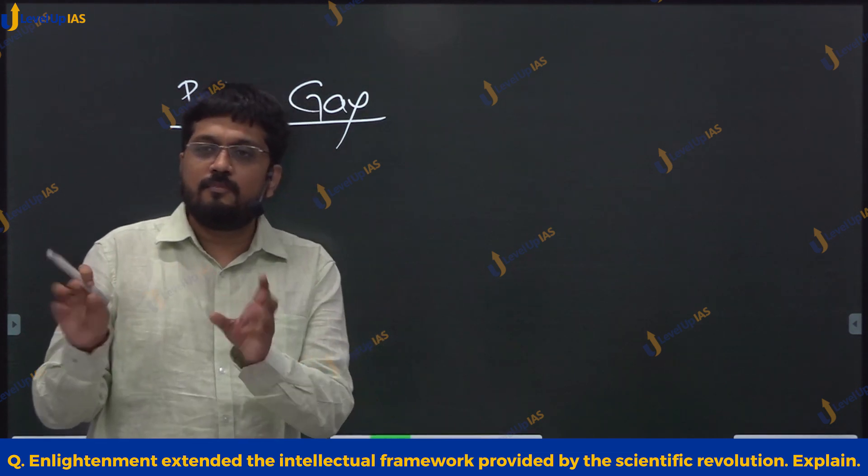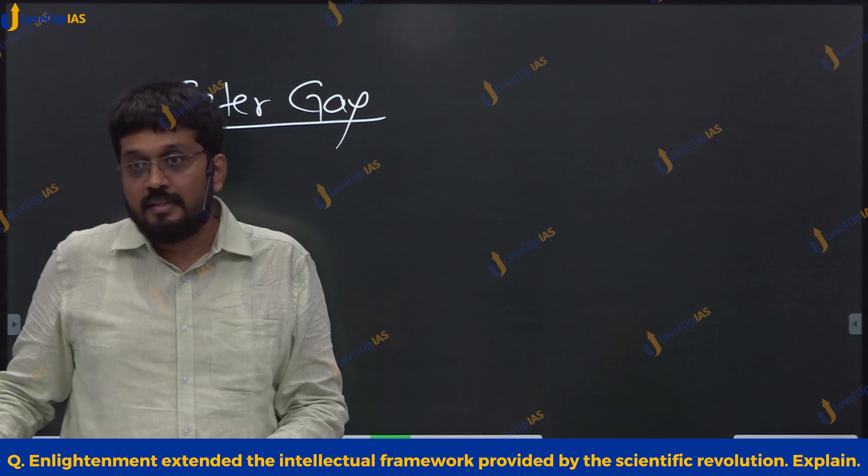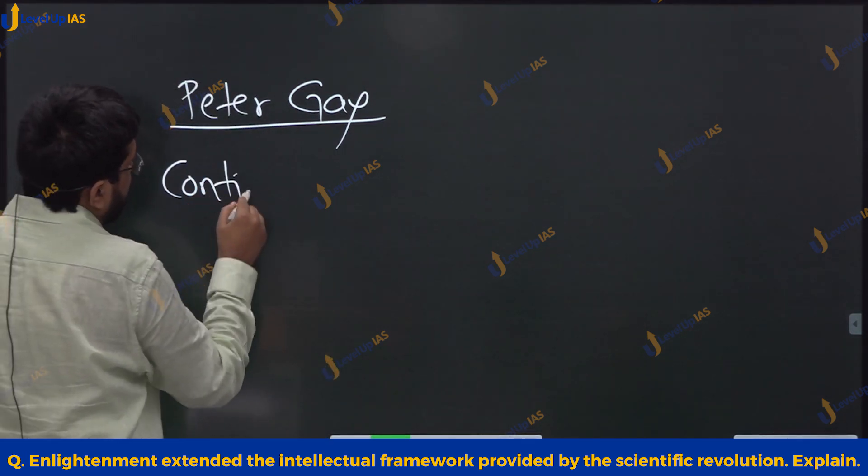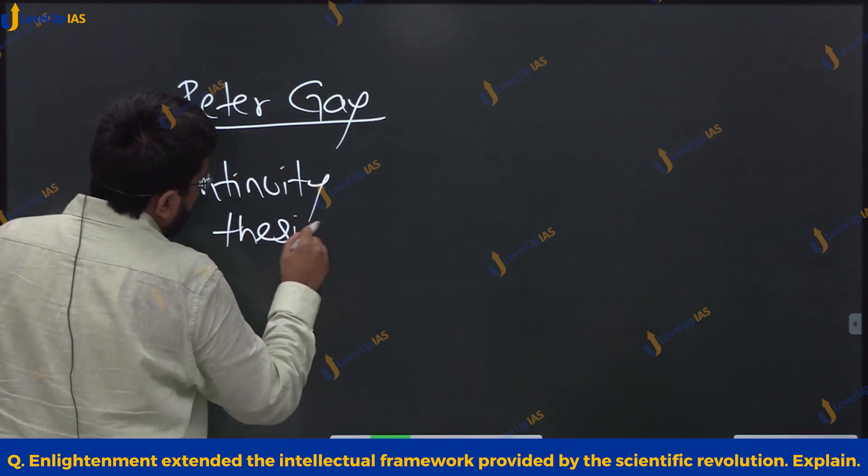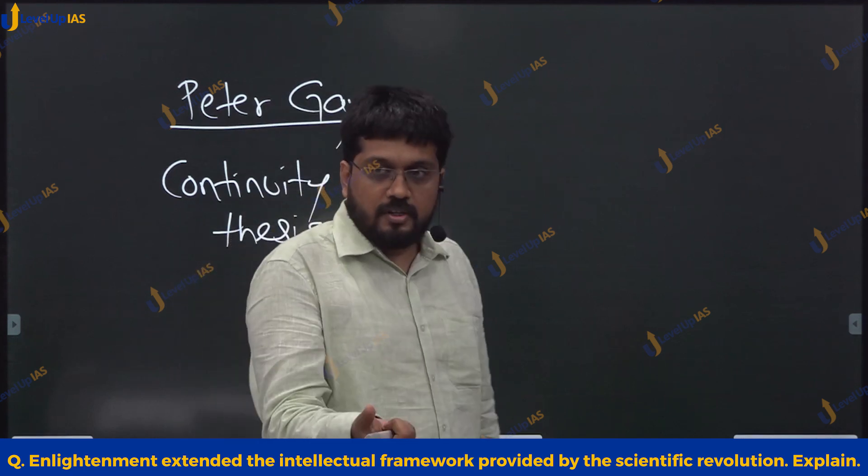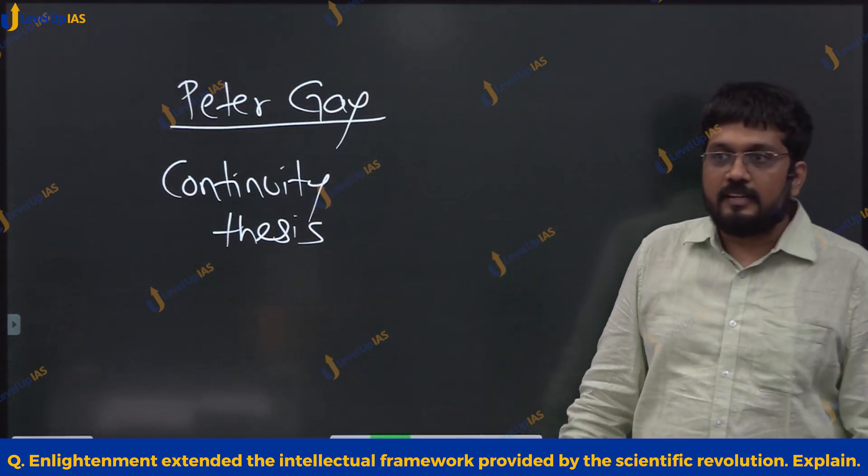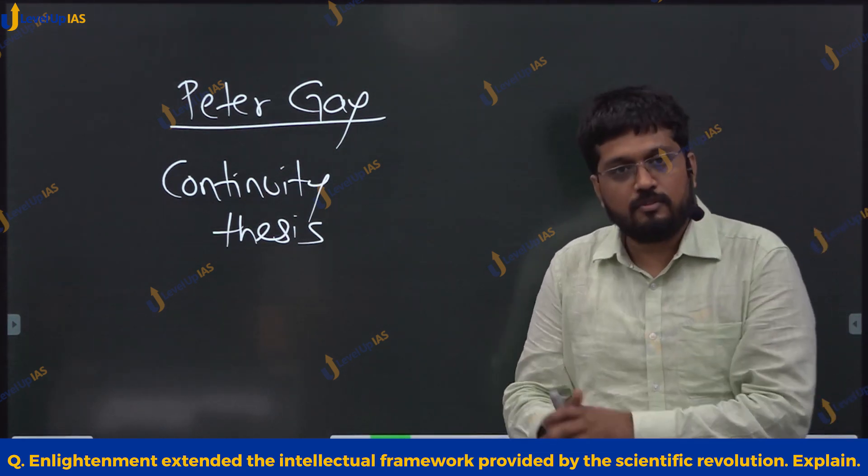He is a very famous historian of enlightenment. He is a propounder of continuity thesis. He says the question presumes the point of view of Peter Gay only, that enlightenment is nothing but extension of the framework created by scientific revolution to different areas.